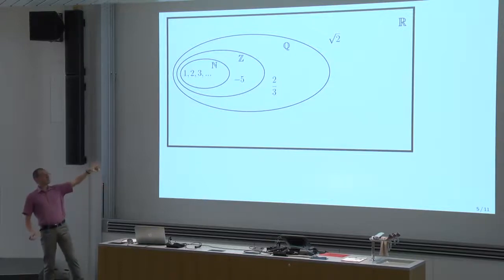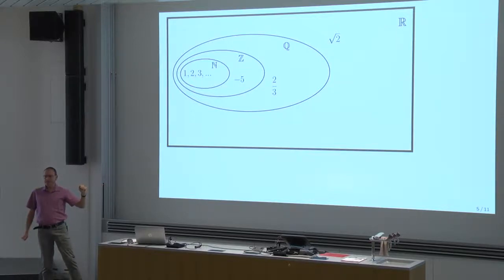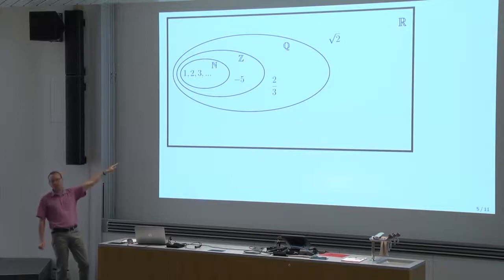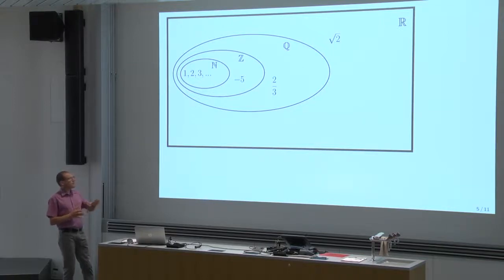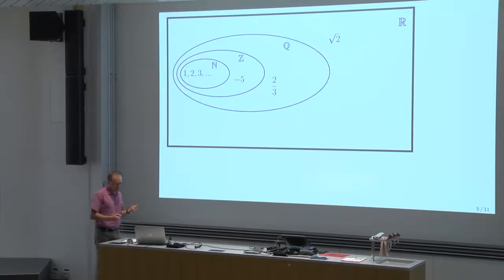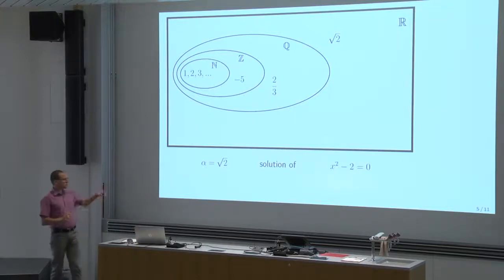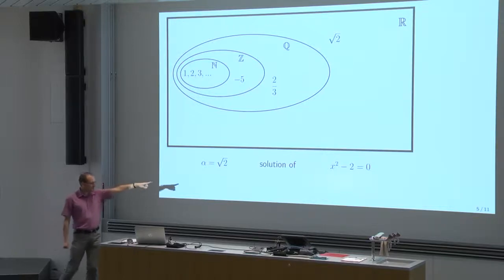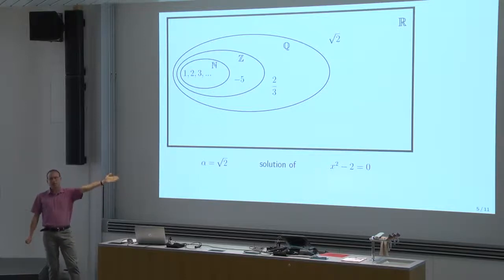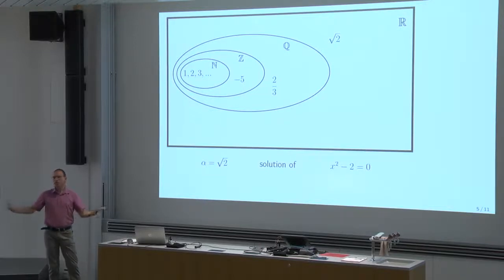How many of you know a proof of why square root of 2 is not rational? The others, look it up online — it's very enlightening, very short. Square root of 2 is not a rational number. Now look at this: square root of 2 is not rational, but it's not a very complicated number. Why? Because it is a solution of the equation x squared minus 2 equals 0 — it's a solution of a very simple polynomial equation.